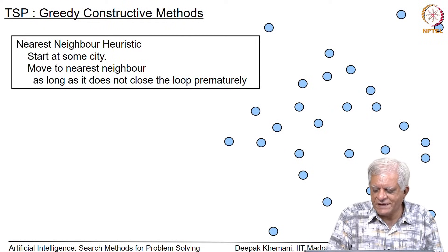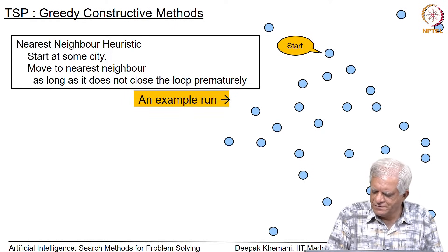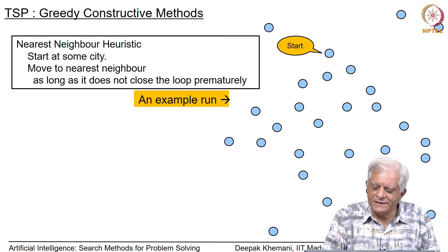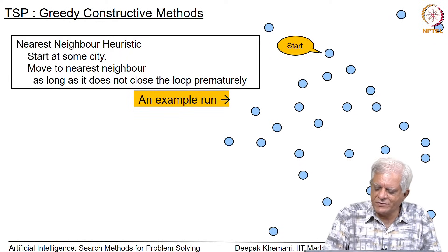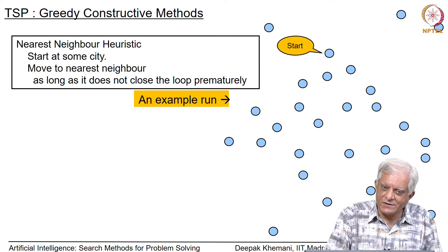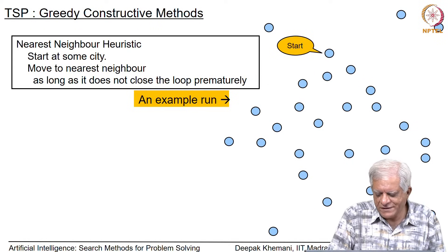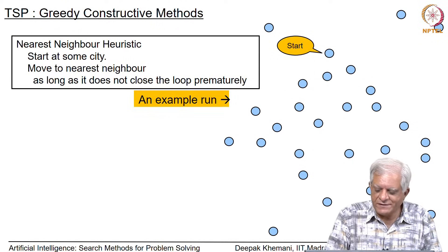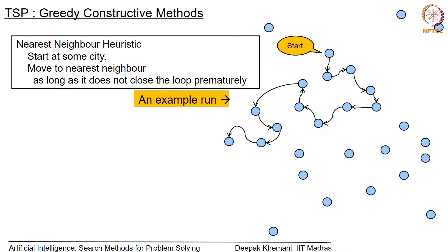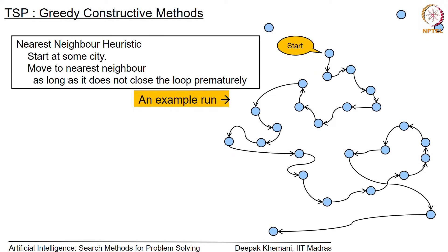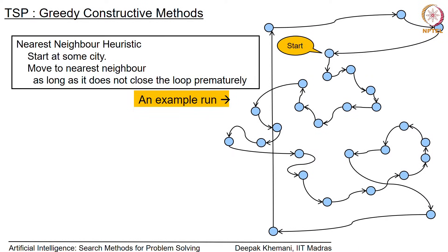Here is an example of the nearest neighbor heuristic with a slightly bigger example. Suppose this is your start state and you keep moving to the nearest neighbor — assuming the distance function is proportional to the Euclidean distance shown on the map — then you would get a tour constructed by moving to the nearest neighbor at every stage. You can see that the nearest neighbor algorithm typically performs well in the beginning, but towards the end, when it has exhausted shorter neighbors, it ends up picking some very long edges.